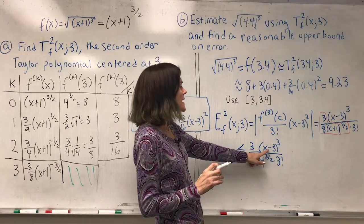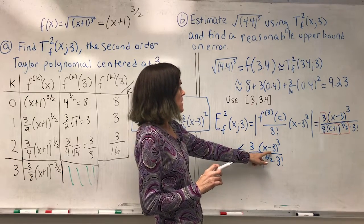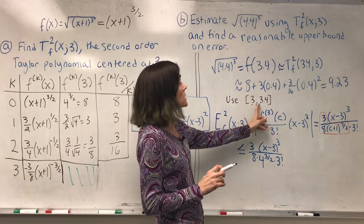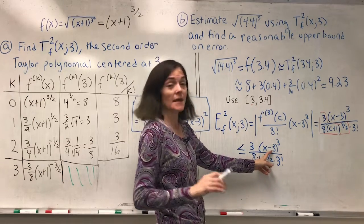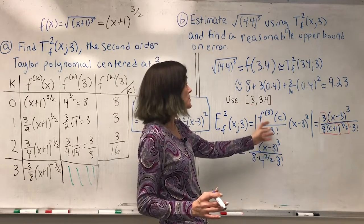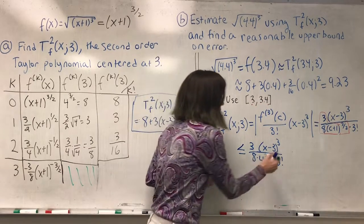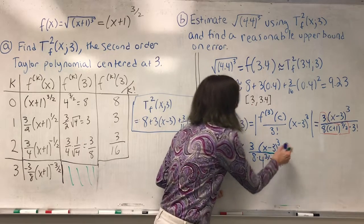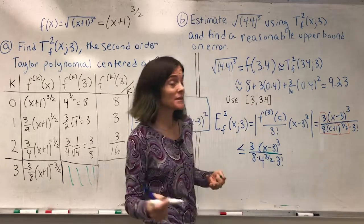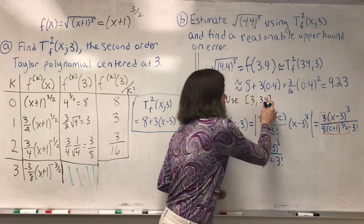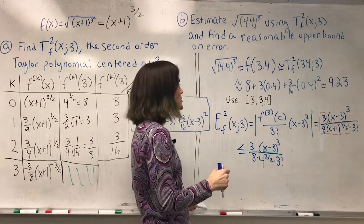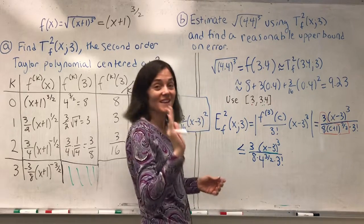Okay, now how big can this be? Well, the largest (x minus 3) cubed can be on this interval is the other end point. It's here. So the largest this can be on the interval from 3 to 3.4 is here, which would be 0.4 cubed.